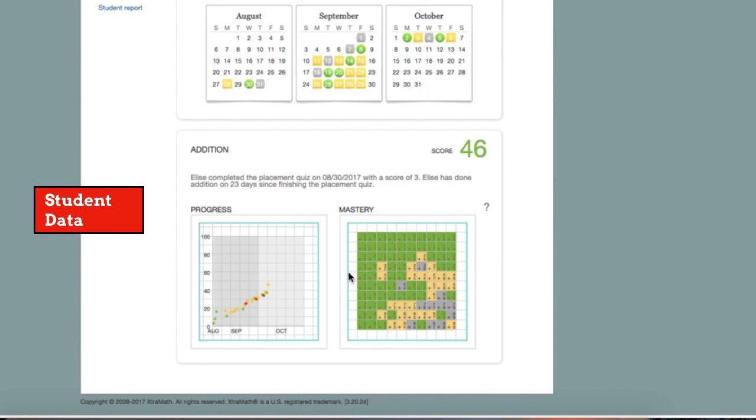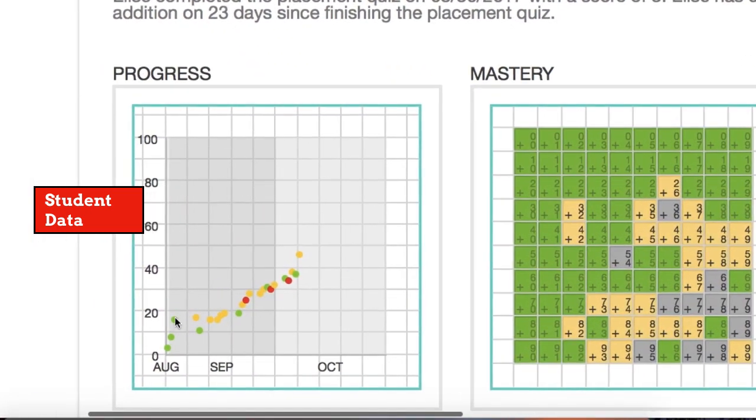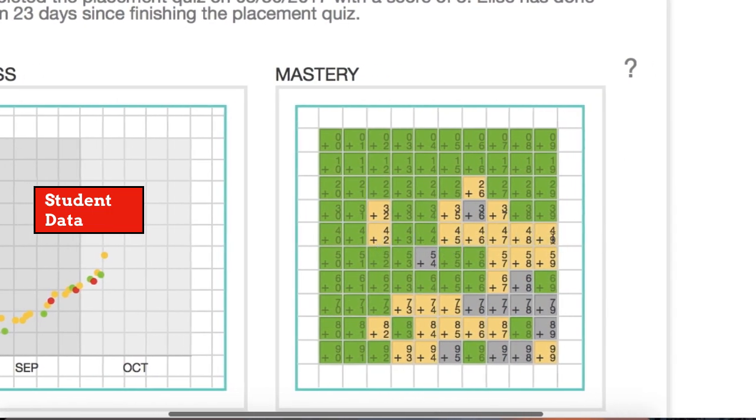This student here currently has a mastery score of 46 percent. On the left you can see a graph for each day she's practiced, and on the right is a matrix of each math fact that she's practicing and how well she knows them.